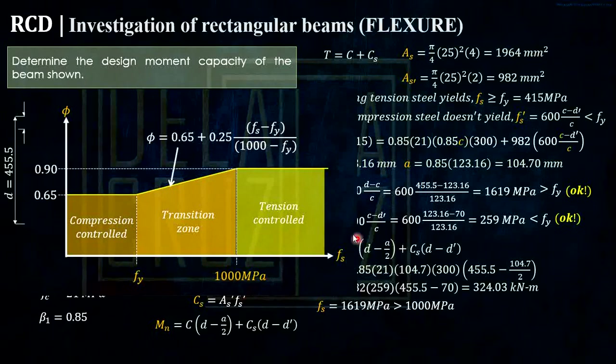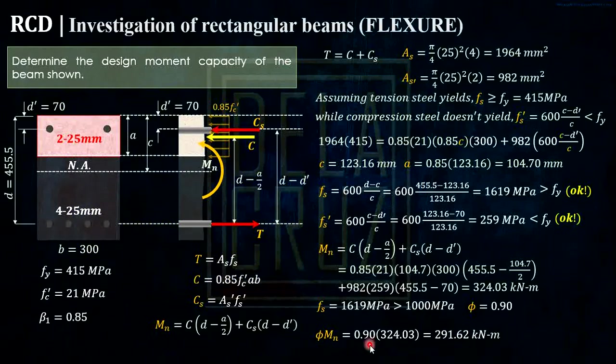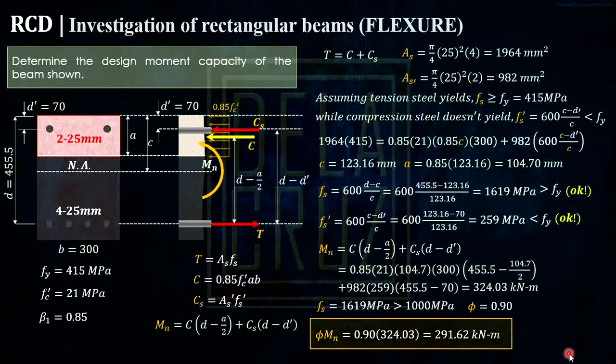So our FS, denote as FS, the actual stress, is 1619. And that is, if this is 1,000, somewhere here. It exceeds 1,000. So if we locate that to our y-axis or the reduction factor, the reduction factor here is constant to 0.9. So we will use phi as 0.9. Otherwise, if at this boundary, transition zone, we will use this formula. Or, if your FS is lesser than FY, which is 415, so 0.65 is the reduction factor. In this case, that is 0.9. Then, calculating the phi Mn or the design moment capacity, the answer is 291.62 kNm.